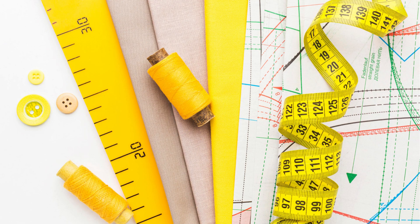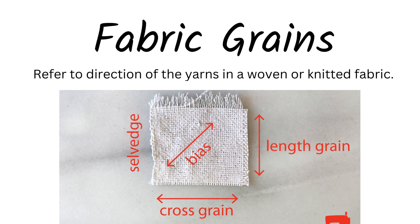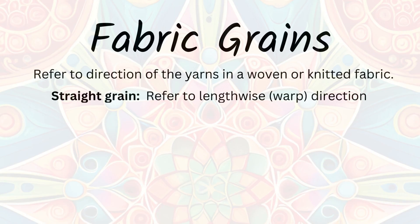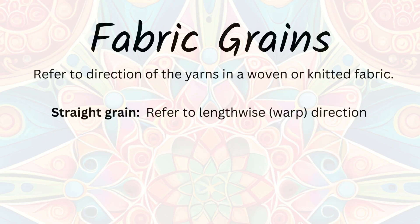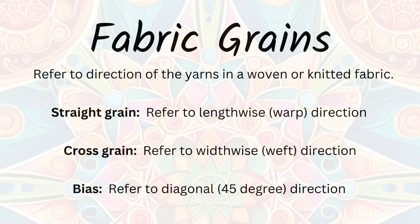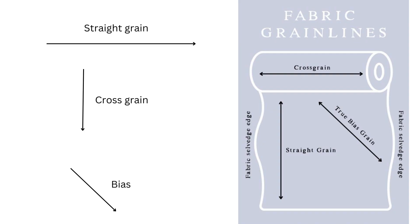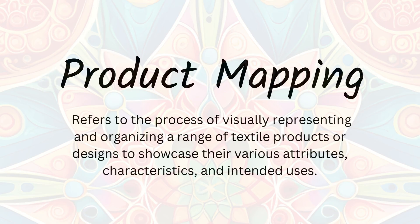Number three: Straight grain, Cross grain, and Bias — fabric ki direction ko indicate karte hain. Straight grain textile design mein fabric ki lengthwise direction ko represent karta hai. Cross grain textile design mein fabric ki widthwise direction ko represent karta hai. Aur jo bias hota hai, voh fabric ki diagonal direction, means 45 degree angle, ko represent karta hai.